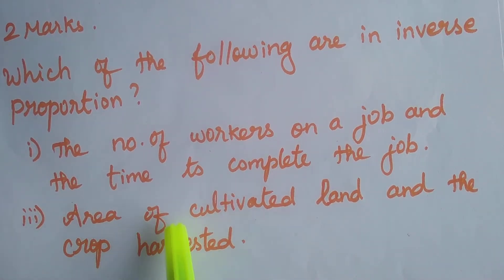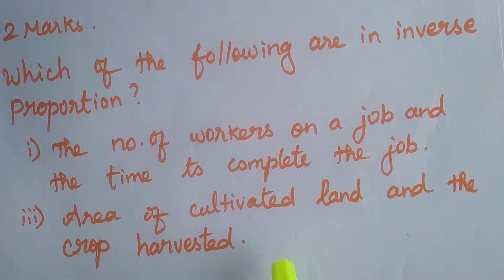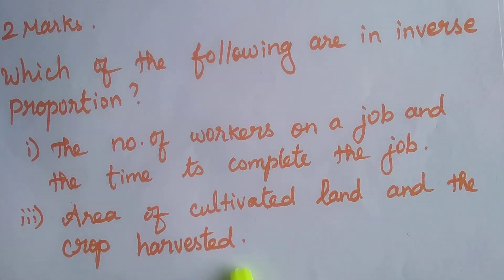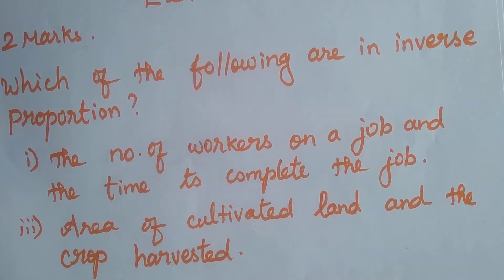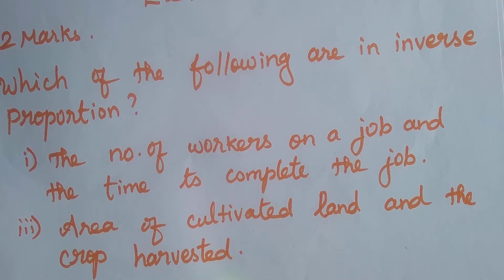Next statement: area of cultivated land and the crop harvested. If the area of cultivated land increases, the crop harvested also increases. If the area of cultivated land decreases, the crop harvested also decreases. Both increase and decrease together, so it is direct proportion.